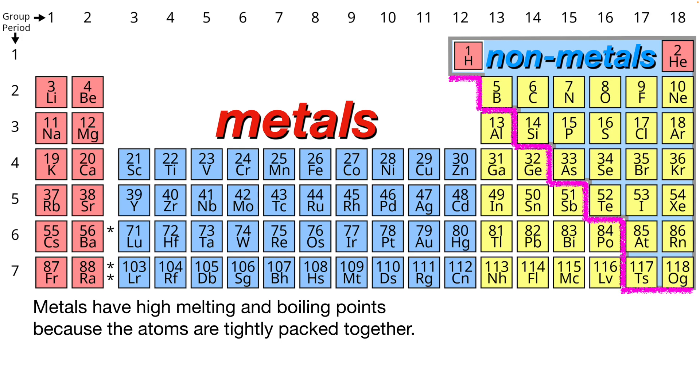Metals have high melting and boiling points because the atoms in these elements are tightly packed together. This just means it takes more energy to break the bonds between them. Those atoms need to move around to go from a tightly packed solid to a loosey-goosey liquid. Metals are dense, and non-metals are not dense. They're not so tightly packed together.